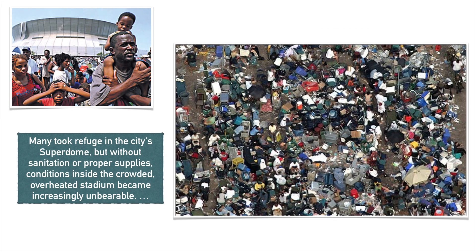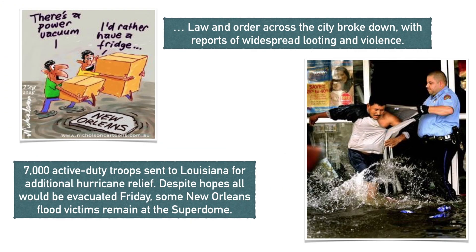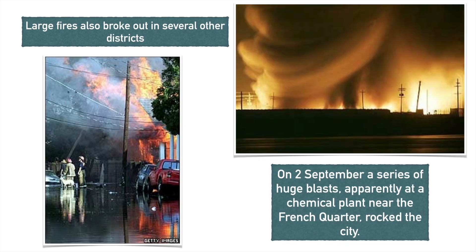Many people took refuge in the city Superdome, but it didn't have sanitation, lacked supplies, and became overcrowded and overheated. Law and order broke down across the city, with reports of widespread violence and looting. Troops were eventually sent in as well. Large fires broke out in several districts, with huge blasts at a chemical plant near the French Quarter.